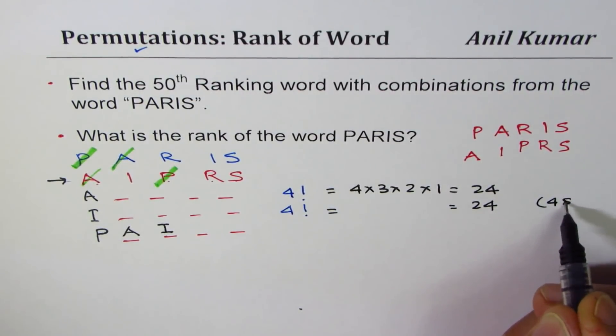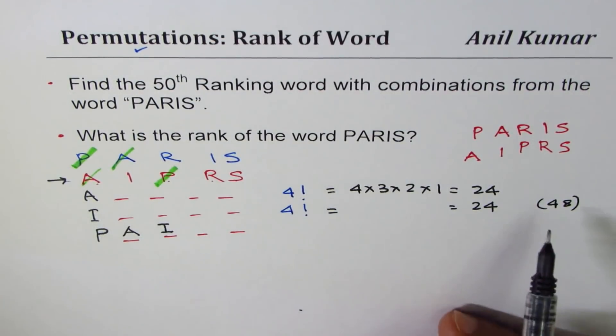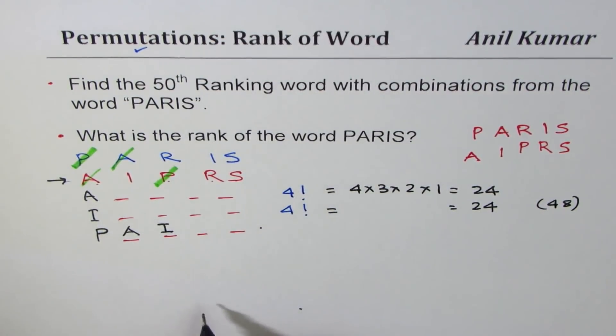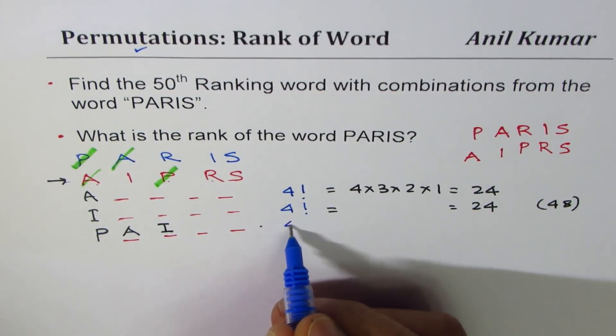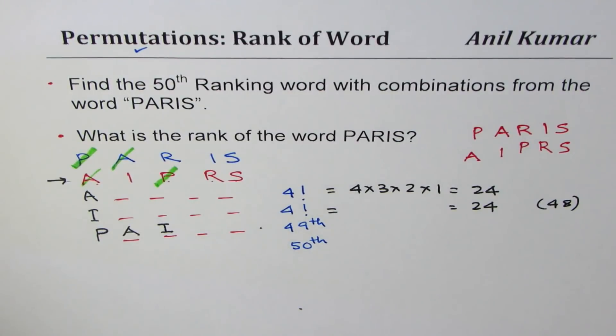So that gives us 48 words before 50th. So this word will become 49th. So we are very close. A word here will be 49th in our list. And then we are going to hit the 50th word. So let's write down what is the 49th word.